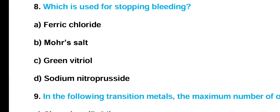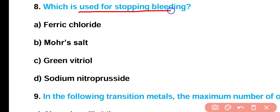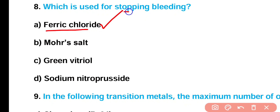Question number 8: Which one is used for stopping bleeding — ferric chloride, Mohr salt, green vitriol, or sodium nitroprusside? Correct answer is option A. Ferric chloride is used for stopping bleeding.